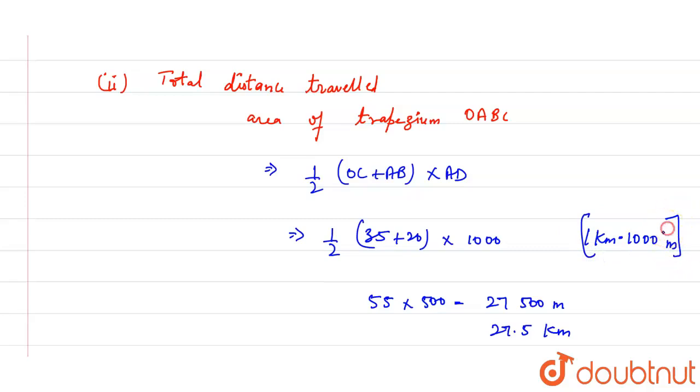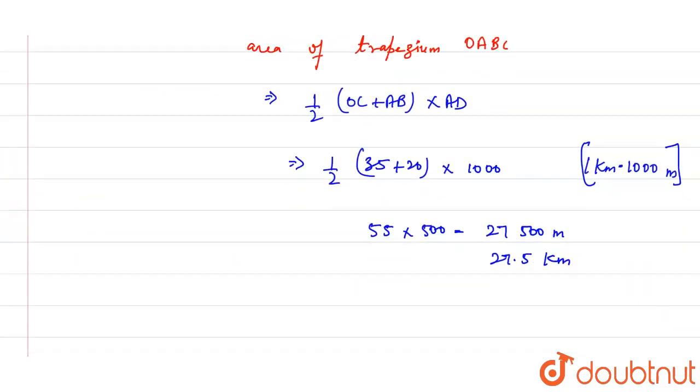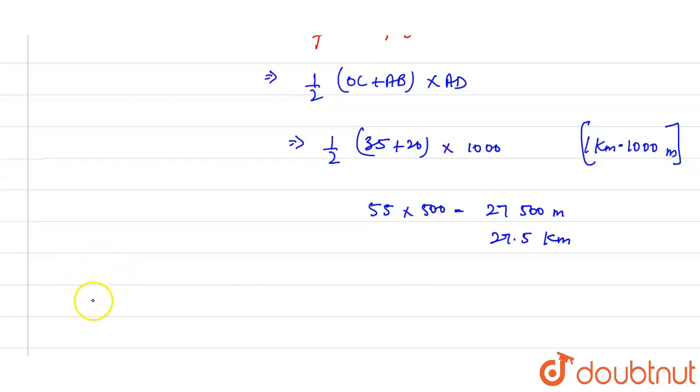Now, we need to find the last thing which is average velocity. Third, average velocity. Average velocity is going to be total distance divided by total time.